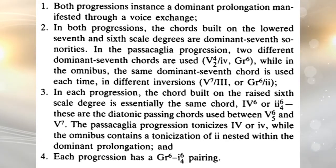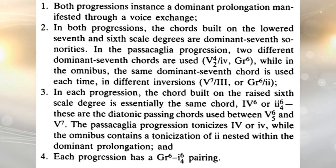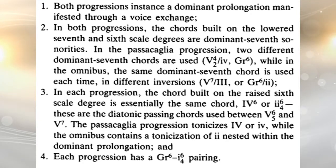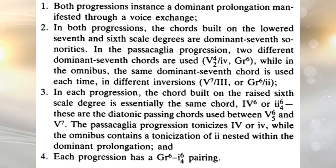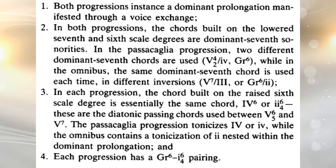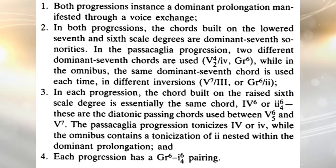In each of the progressions, the chord built on the raised sixth scale degree is essentially the same chord — it's a matter of whether we have the 4/6 or the 6/4 position. These are diatonic passing chords used between the 5-6-5 and the V7. The passacaglia tonicizes the IV while the omnibus tonicizes II nested within the dominant prolongation. Then each one uses the German augmented sixth going as expected to the I 6/4 and then the V.